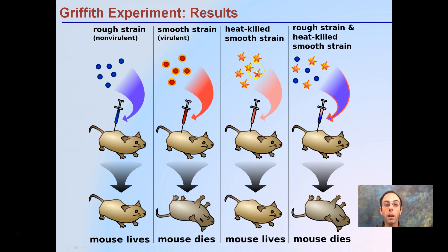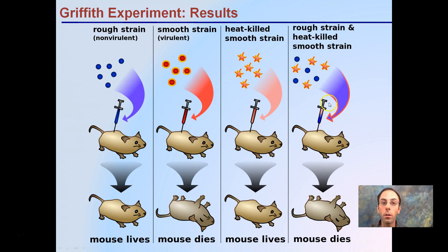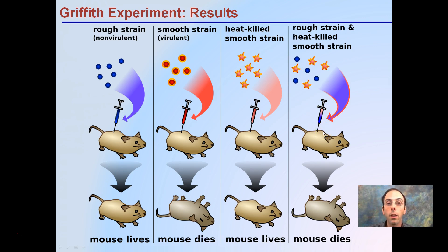However, what's most interesting is that when we take a combination of the rough strain — which didn't cause disease — and the heat-killed smooth strain — which also didn't cause disease — and mix them together and add this to a mouse, sadly this mouse ended up dying.